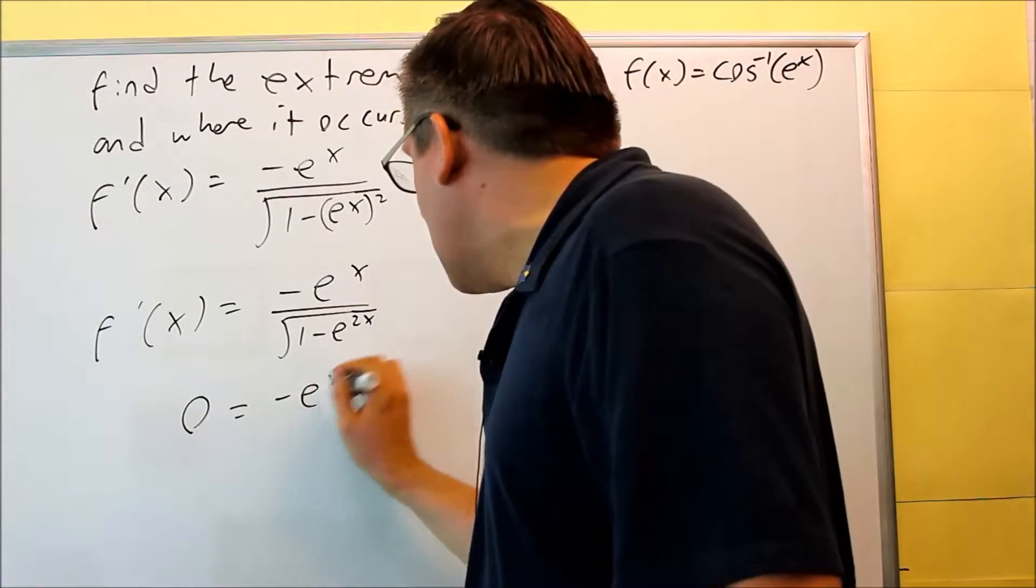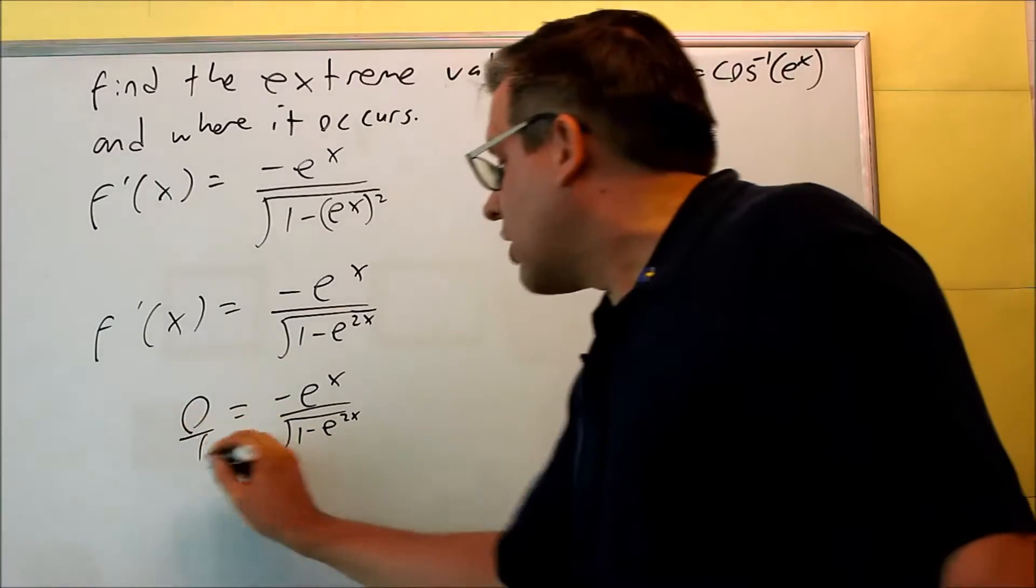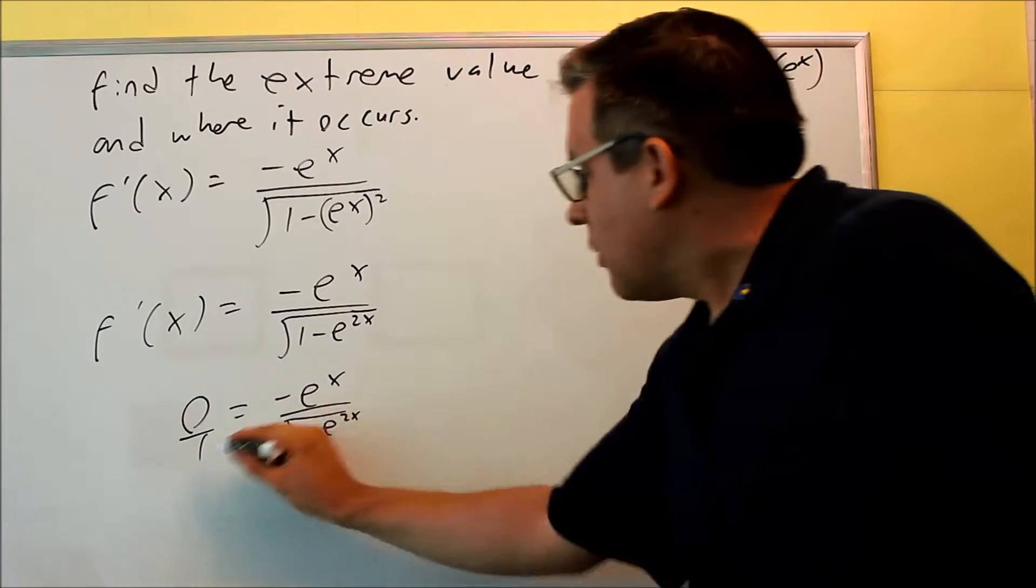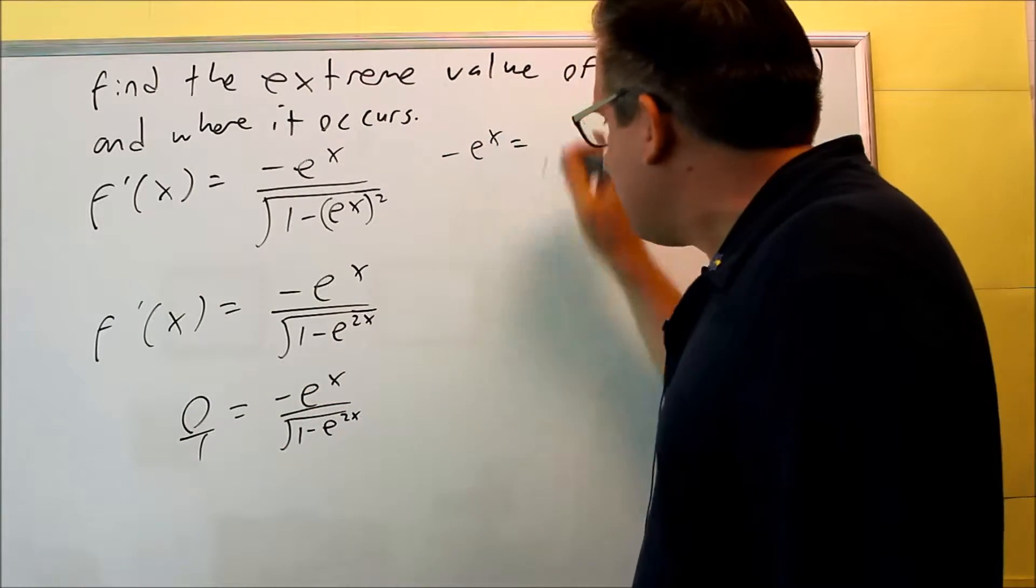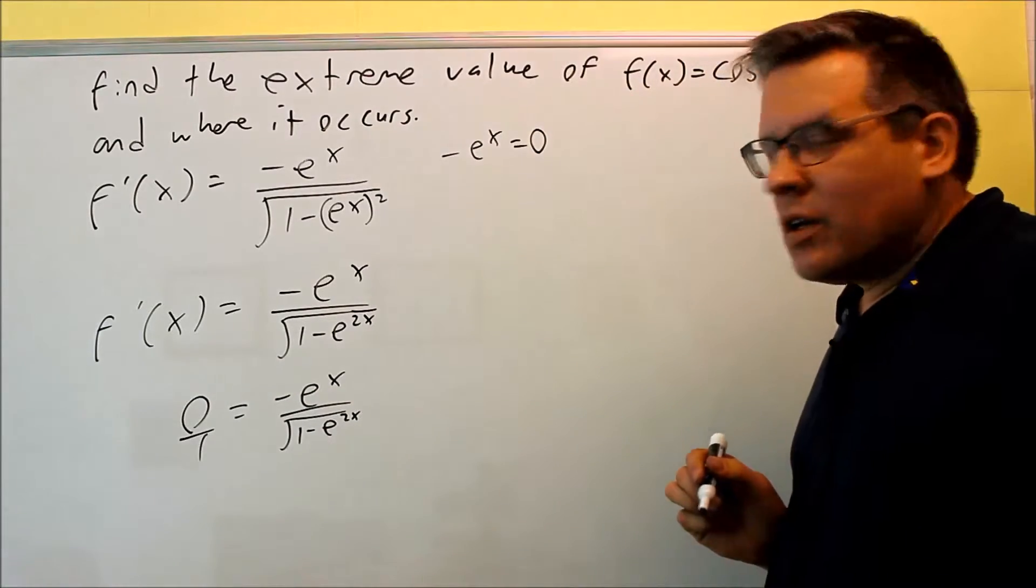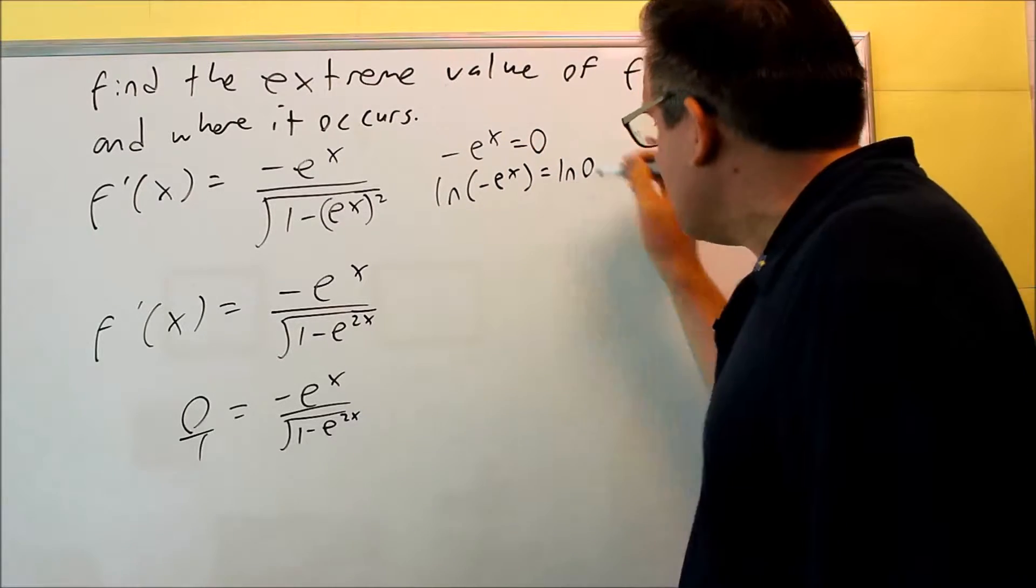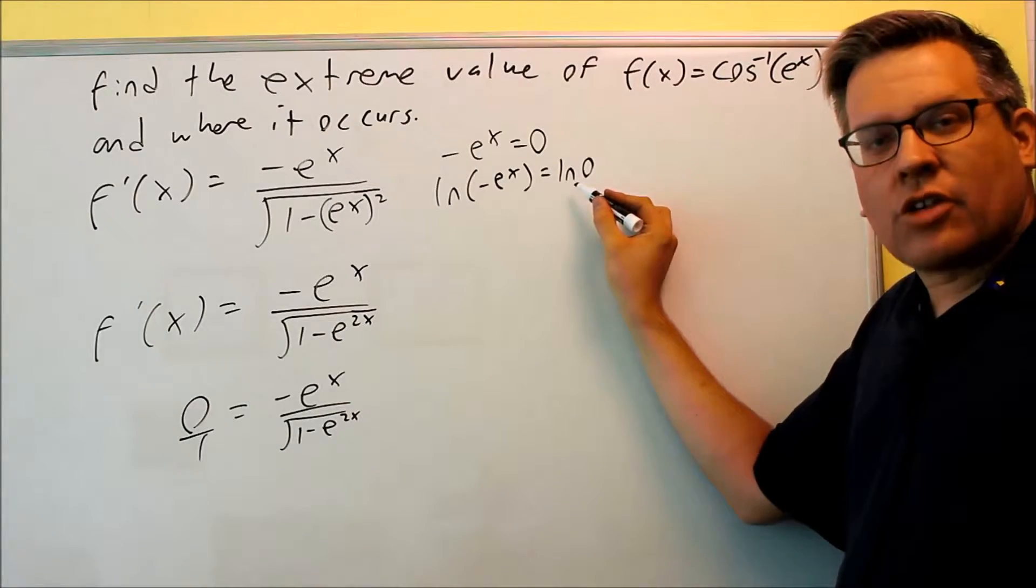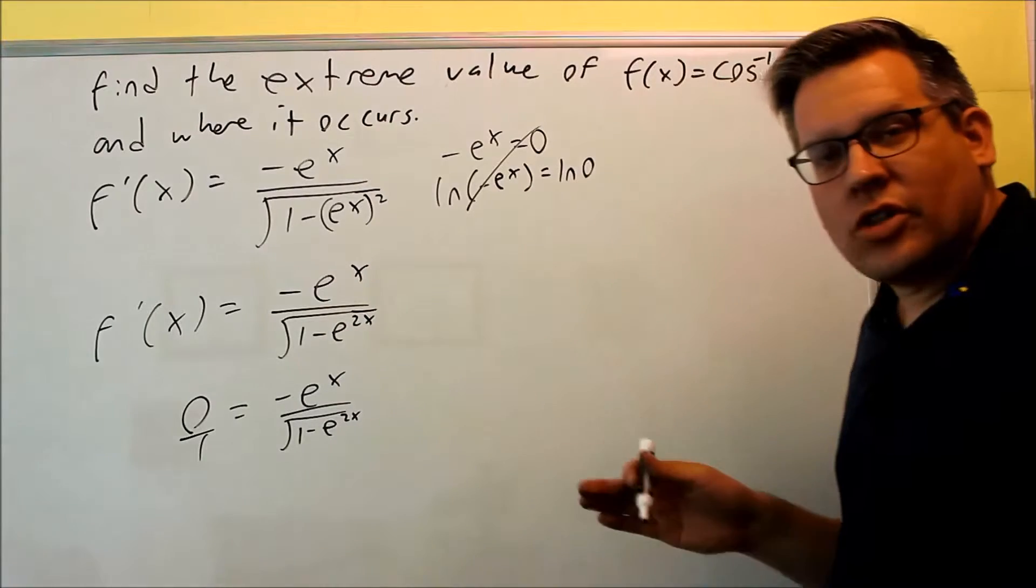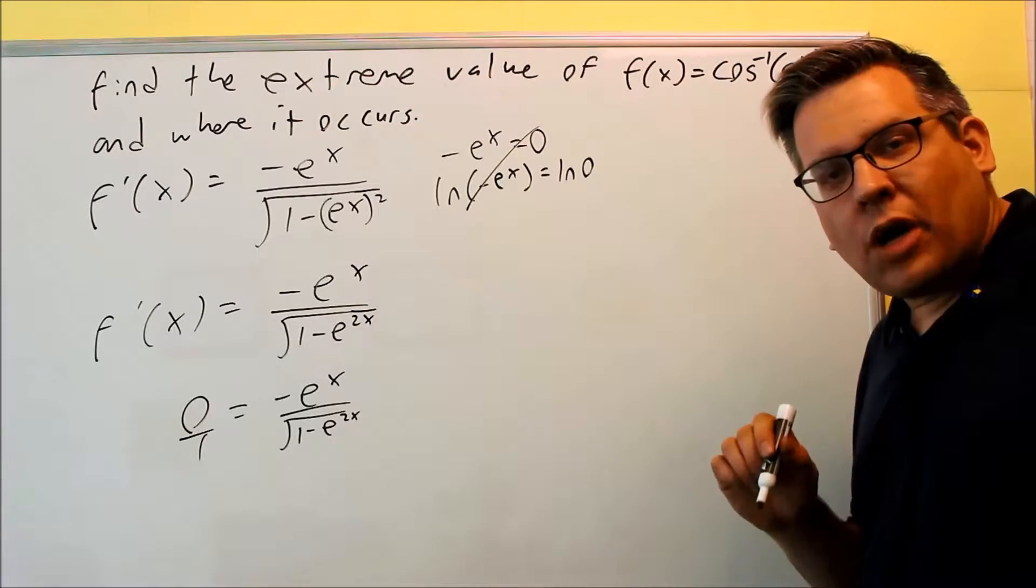Zero equals negative e to the x over the square root of 1 minus e to the 2x. So we can write this as 0 over 1, and then we're going to cross multiply. We multiply that, we get negative e to the x. And then 0 times the square root is going to give us 0. Now, in order to solve for this, I would have to take the natural log of both sides. But we can't do natural log of 0. So therefore, nothing will make this 0. We don't get any critical numbers by trying to set the derivative equal to 0.